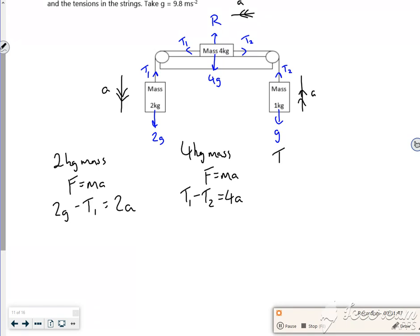Now let's look at T2, the 1kg mass. So if I do F equals ma on the 1kg mass, it's going up. So T2 minus g is equal to 1 lot of a.